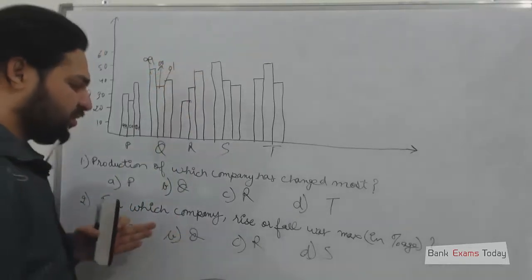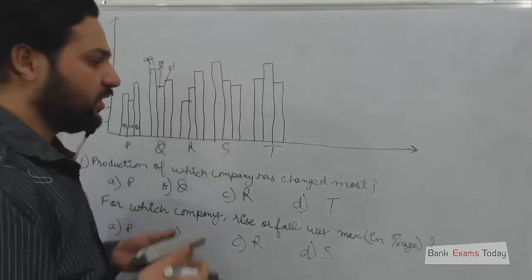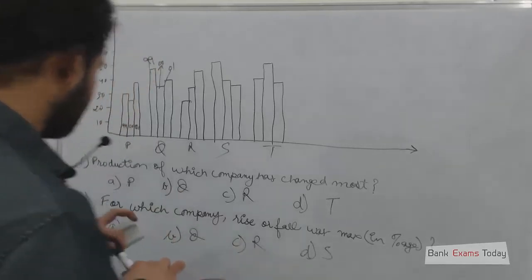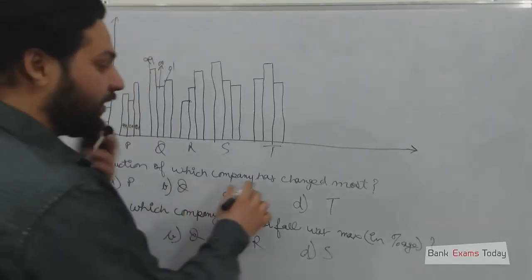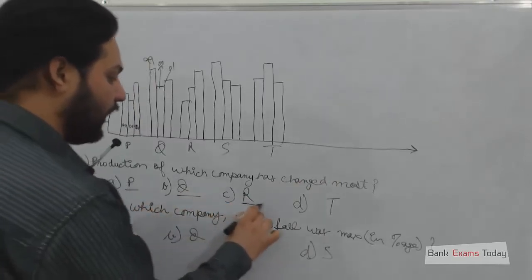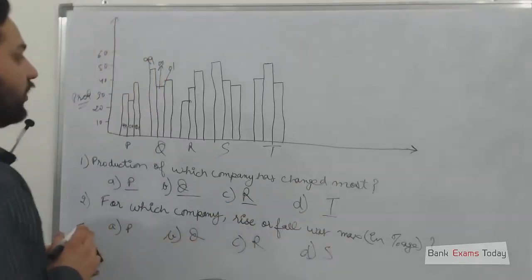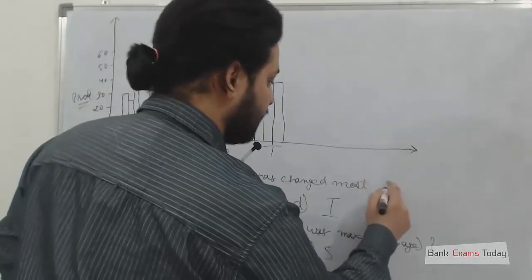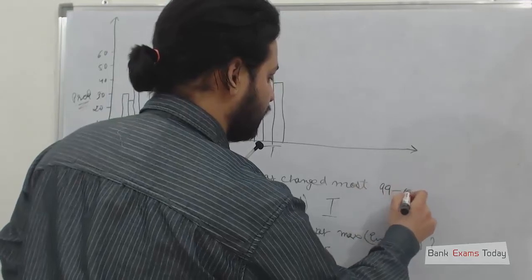So here are the two questions. Actually, the questions were 5 to 6, but the remaining questions were simply calculations. So these are the two questions. Production of which company has changed the most? Company P, Q, R, or T. So here you have to see between the years, between year 99 to 2001.